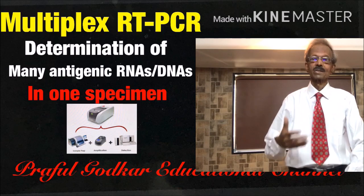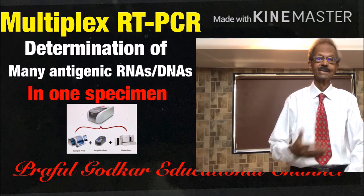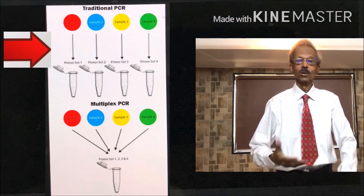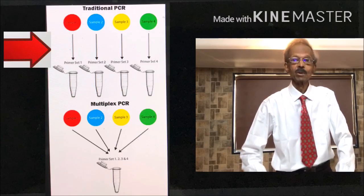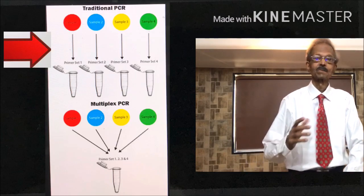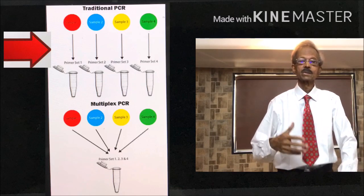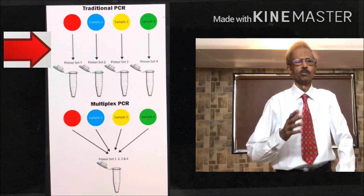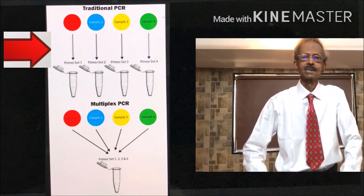It is important to note that present methods of PCR, RT-PCR and RT-LAM detect only one type of antigenic RNA or DNA in the patient's sample. However, the disadvantage is multiplex PCR is not possible by all these methods.